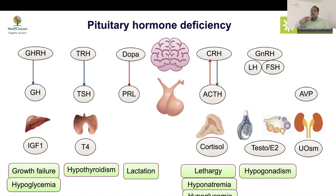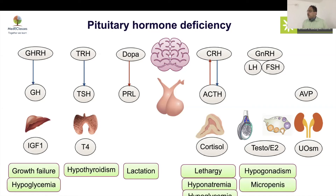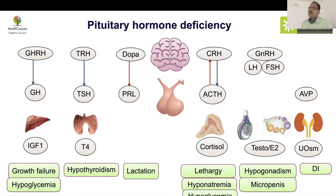Hypogonadism can present with delayed puberty, stalled puberty, oligomenorrhea in girls, erectile dysfunction in males, and congenitally may present with micropenis. AVP deficiency causes diabetes insipidus. Gonadotropin deficiency is the most commonly seen pituitary deficiency.